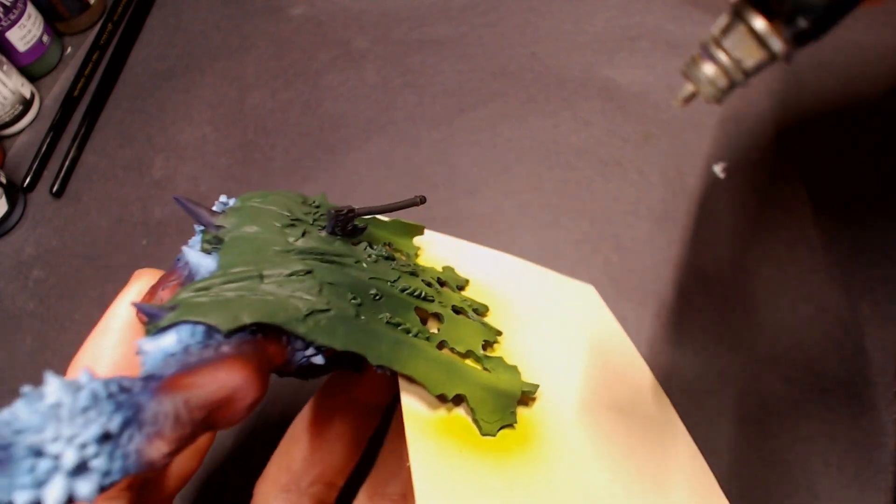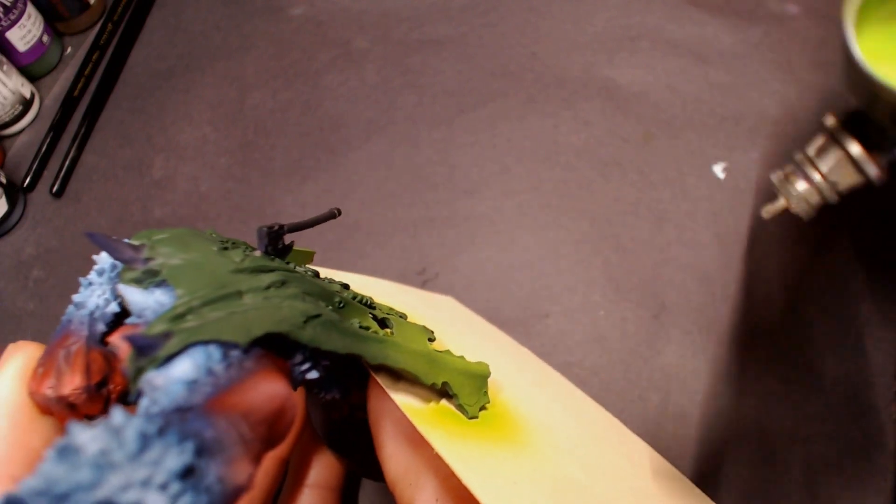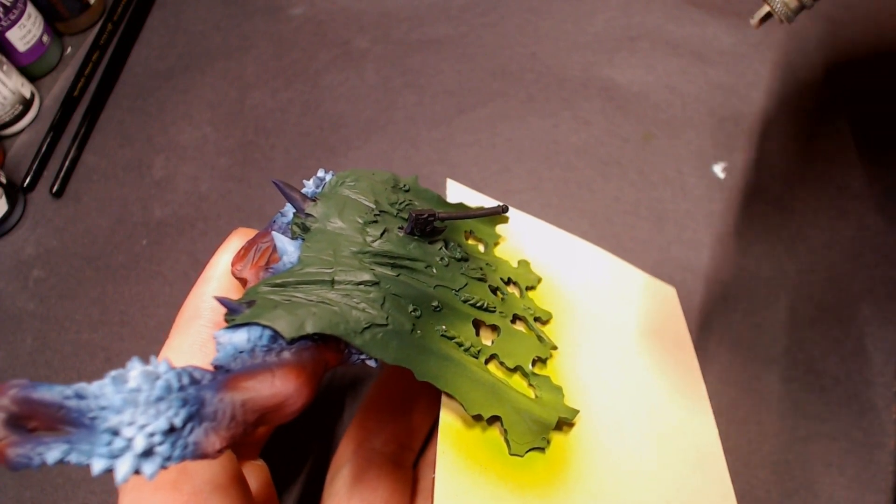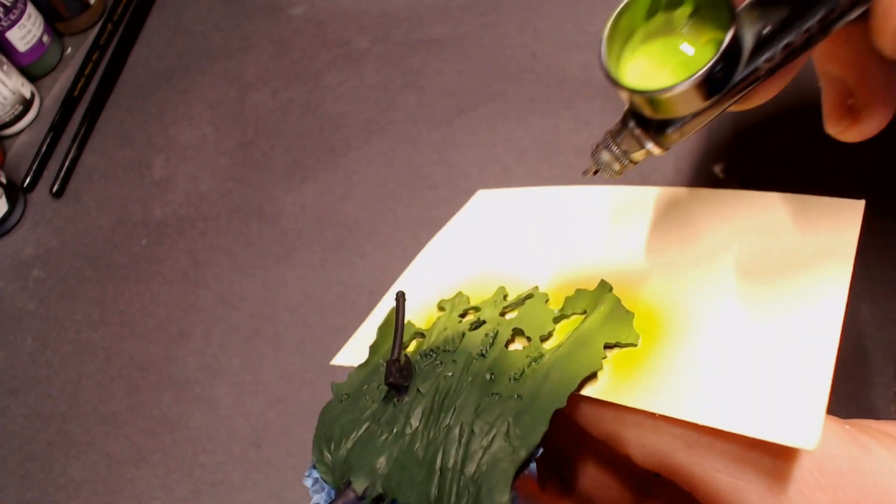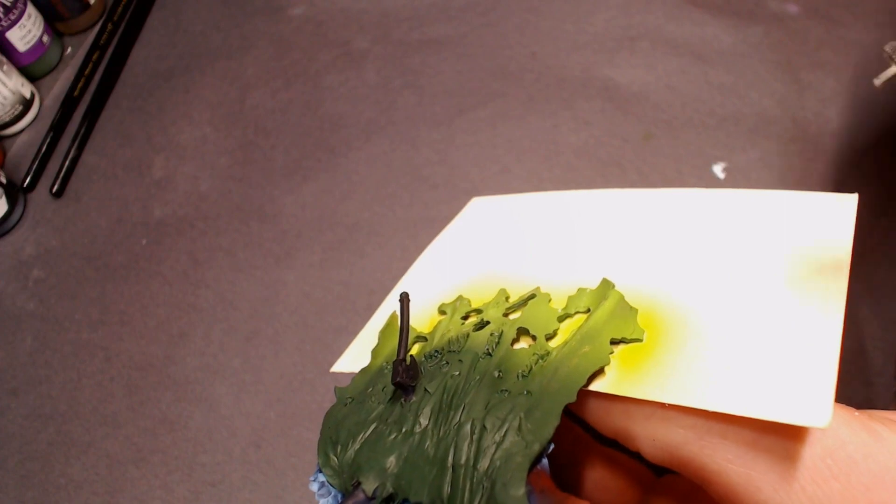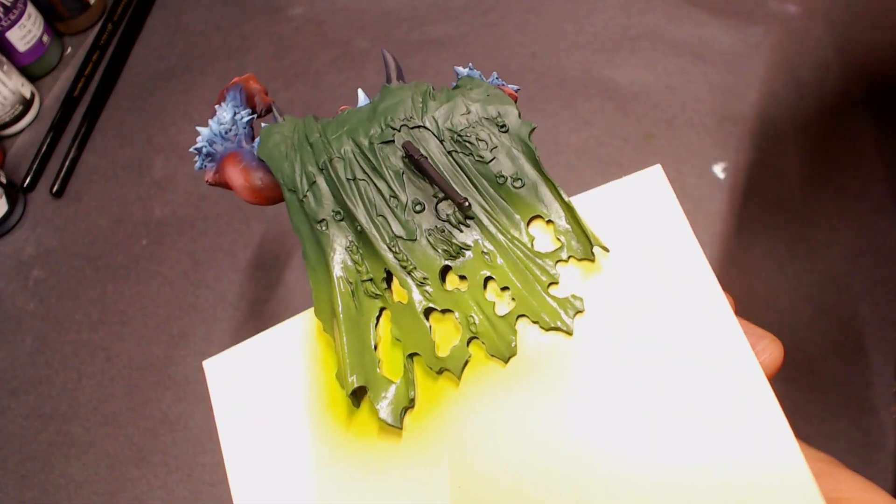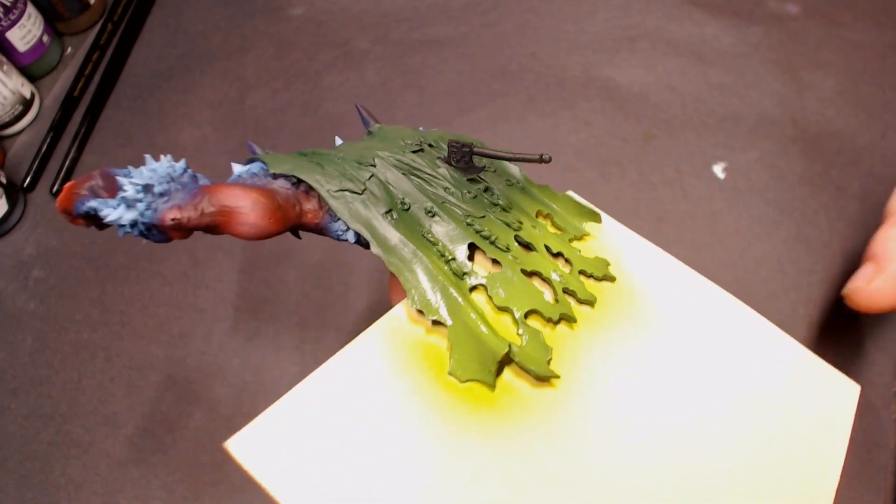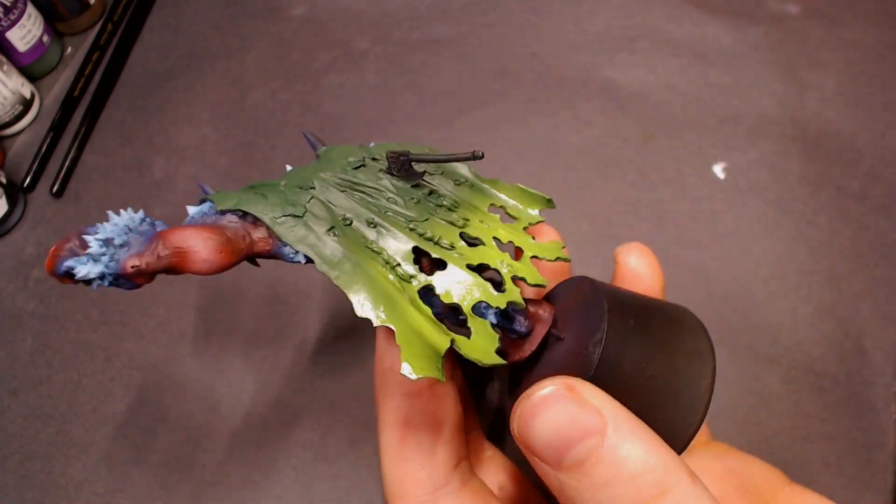Again, you can use sticky notes, business cards, cardstock, you can even use your thumbs or fingers in some aspects to mask off different areas. I've also seen people use sticky tack or blue tack depending on what they call it in your region, and that seems to work pretty well. You just have to be careful to make sure to get all that sticky tack off of the model when you're done.